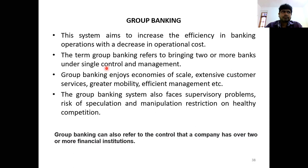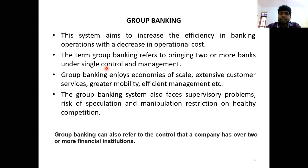For example, XYZ Holding Company controls Bank A, Bank B, and Bank C. There is no branch relationship between them — these banks are independent entities — but they are controlled by a single board of directors. Group banking enjoys economies of scale, extensive customer services, great mobility, and efficient management. The group banking system also faces supervisory problems, risk of speculation and manipulation, and restriction on healthy competition.